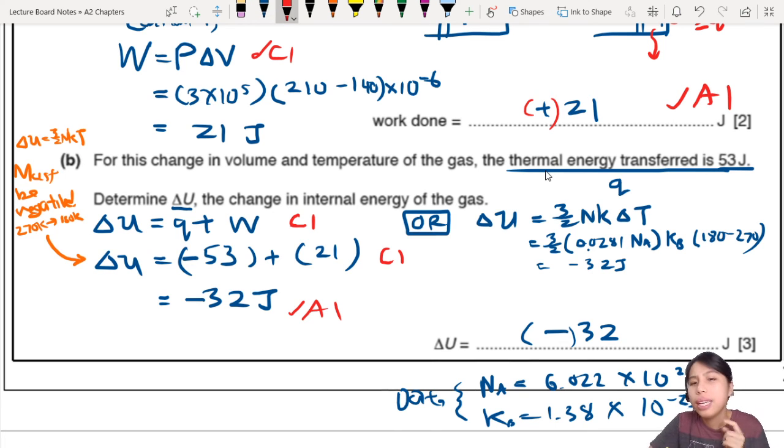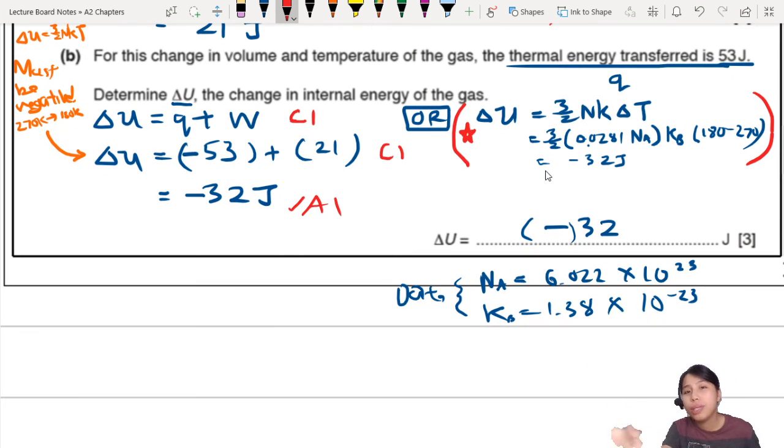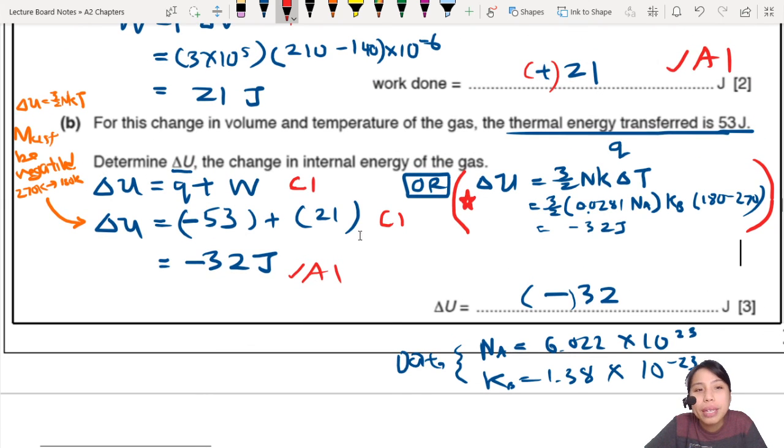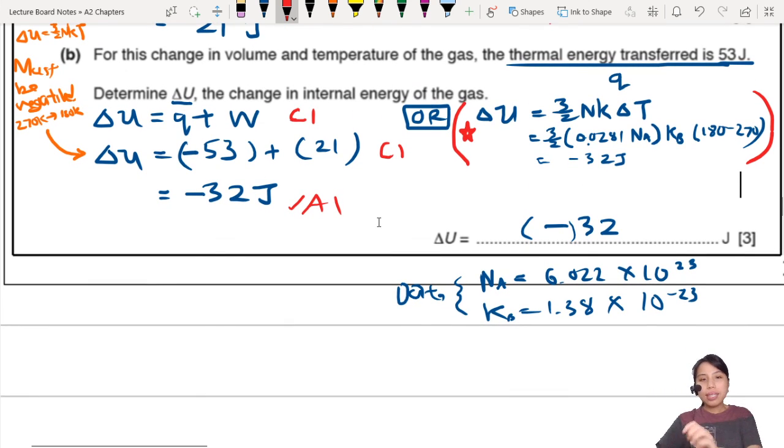I do have a comment on this though. Sometimes, there will be times where the mark scheme doesn't mention this method, especially if you don't know the temperature directly, and you don't know the moles. So, I would recommend you only use this method as a way to check your other method, just to check the sign of whether it should be negative or positive, because sometimes you don't have enough data to find it, and sometimes the mark scheme doesn't mention it, so they may not award you a mark for that. So, I recommend you, whenever you see work done, internal energy, use this left side method, but the right side method you can use to check the sign of your internal energy.